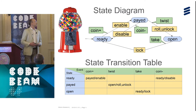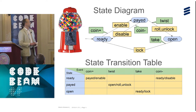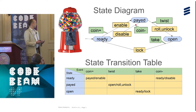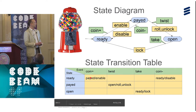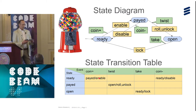We can visualize the state machine with a state diagram or with a state transition table — two common ways. We see here we start in the state 'ready,' and when the event 'coin_plus' occurs, we go to state 'paid,' and on the way we do the action 'enable.' Both representations say the same information.